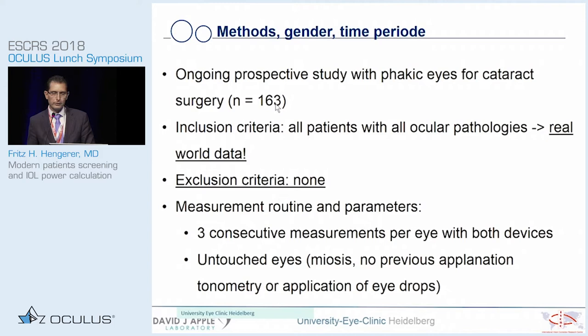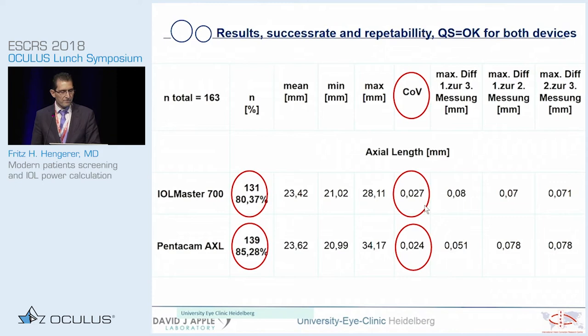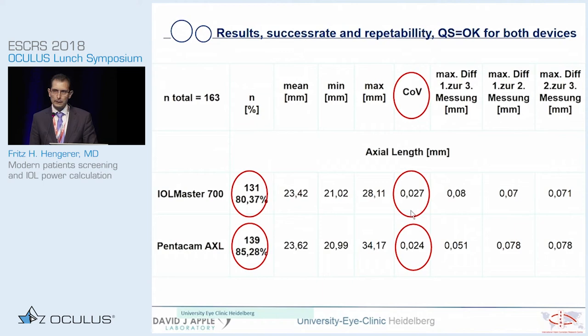We included all patients scheduled for cataract surgery with no ocular pathology exclusions. It seems a simple study but it isn't — we performed three consecutive measurements per eye with both devices. Eyes were left untouched, with no mydriasis, tonometry, or application of eye drops performed. Out of 163 eyes, the IOL Master 700 reliably measured 131 eyes, while the Pentacam measured slightly more. We then looked at coefficients of variance to address repeatability of consecutive measurements. Both devices proved very reliable, with the Pentacam showing slightly superior repeatability.